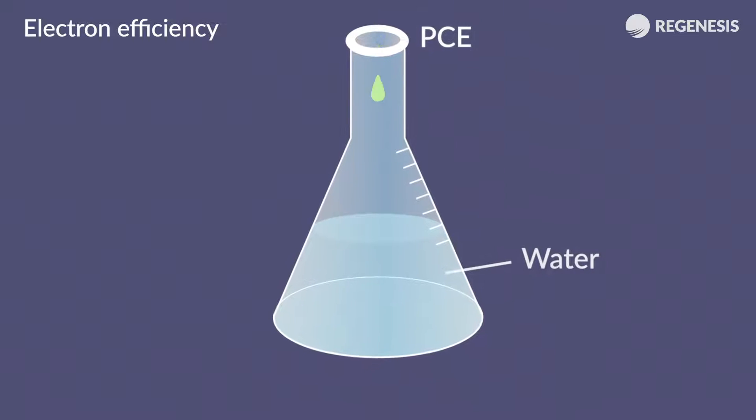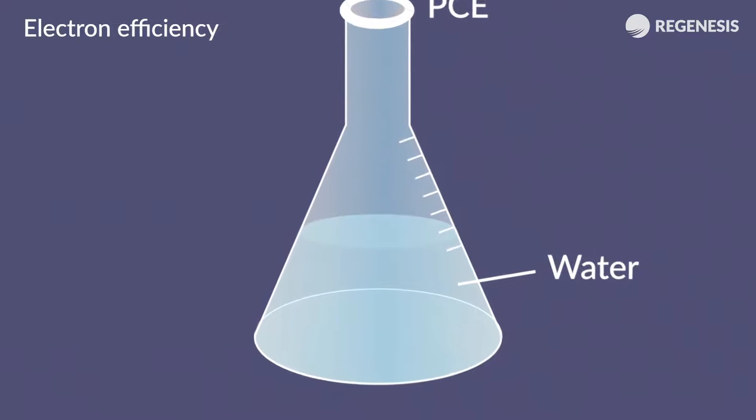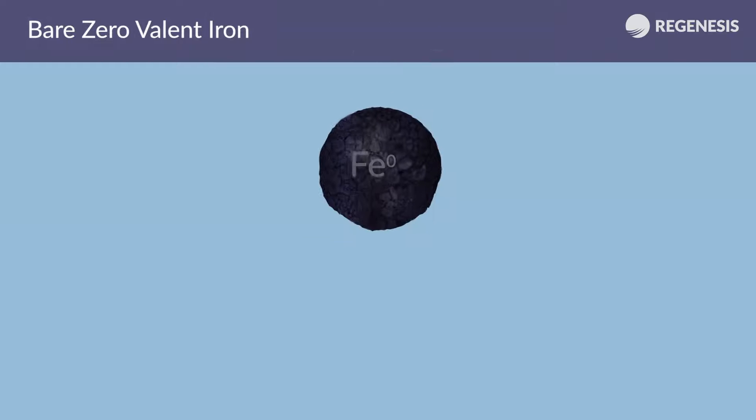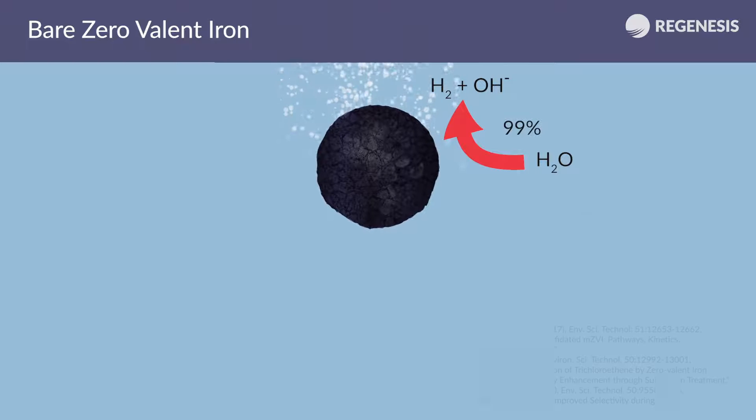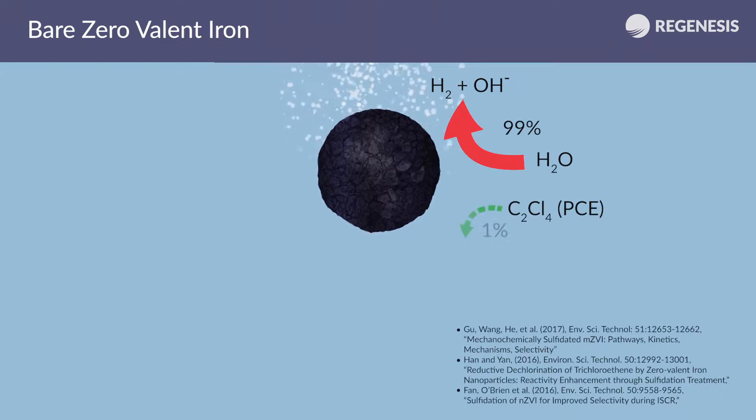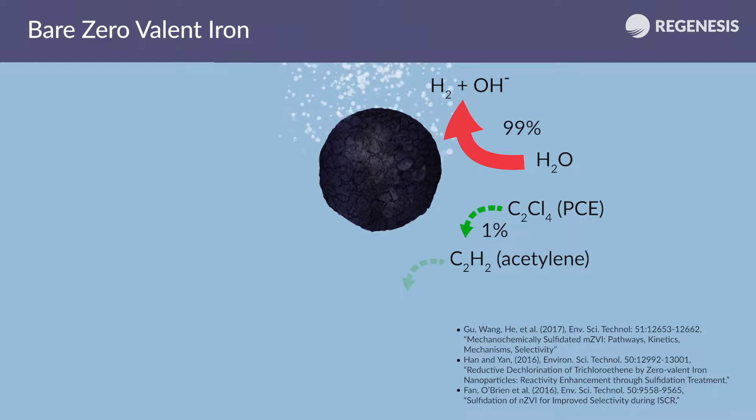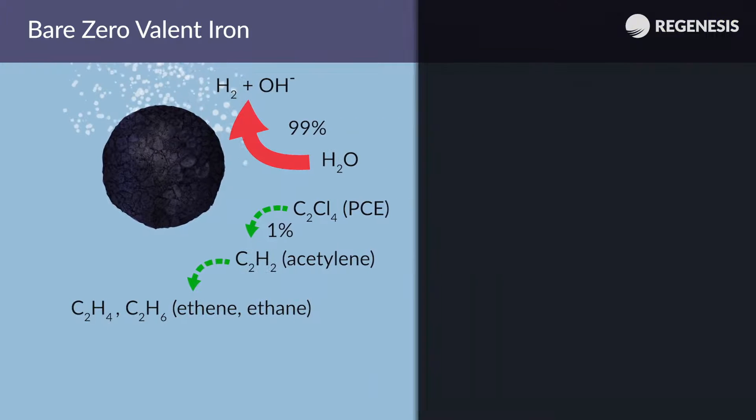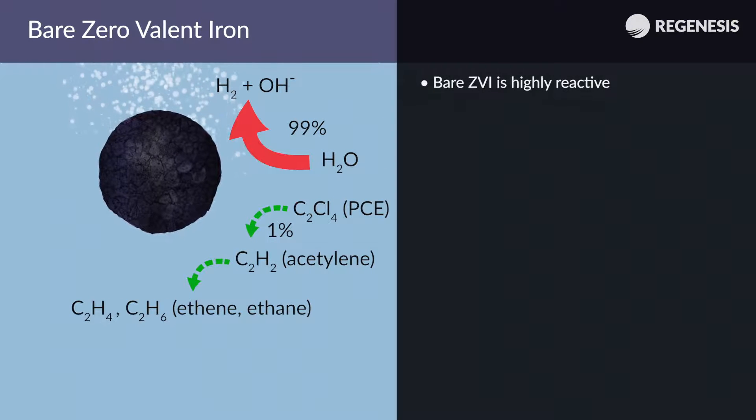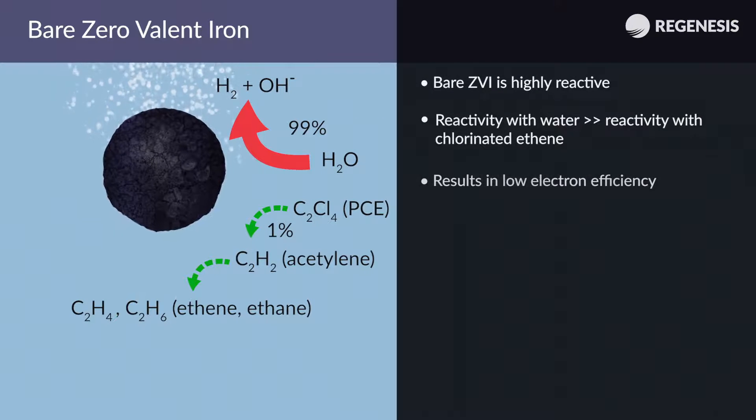Electron efficiency describes the relative amount of electrons provided by the zero-valent iron core that actually reduce the target contaminant, compared to those lost to reaction with water through hydrolysis. Bare zero-valent iron has a low electron efficiency, with as much as 99% of electrons being used to degrade water. Reduction of the target contaminant is minimal, so most of the potential chemical reduction is lost.